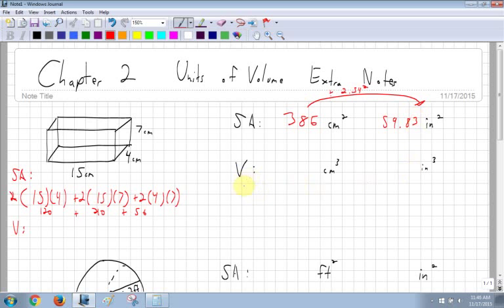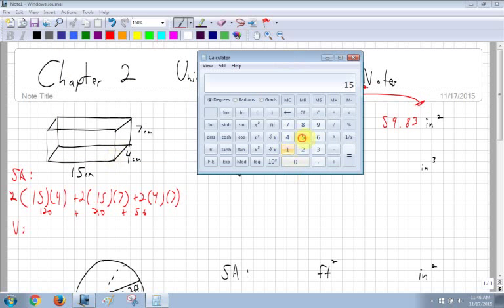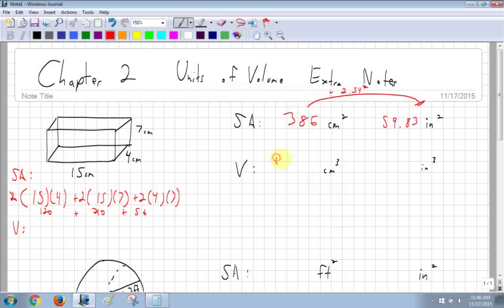The volume conversion is, I mean, for the volume is a little easier because I just multiply the 15, 7, and 4. And then when I'm converting this to inches cubed, this is centimeters cubed to inches cubed, I have to divide by 2.54 cubed.